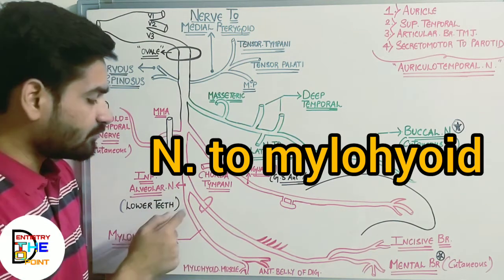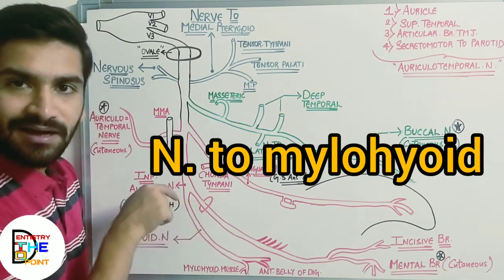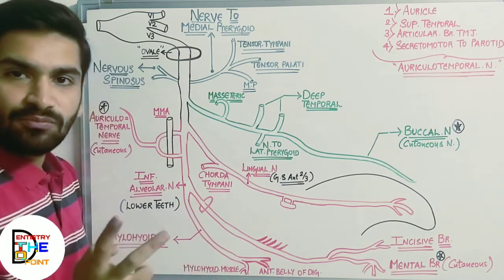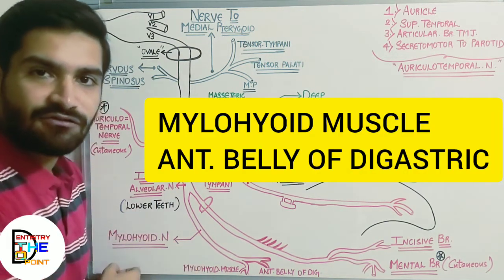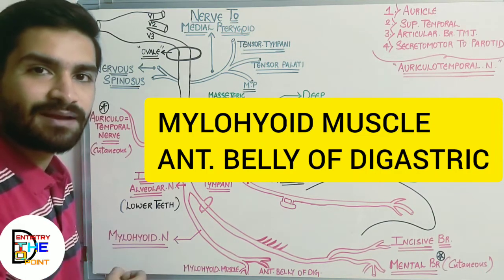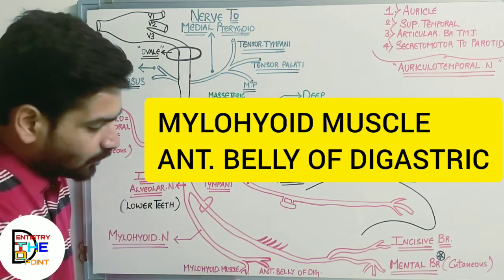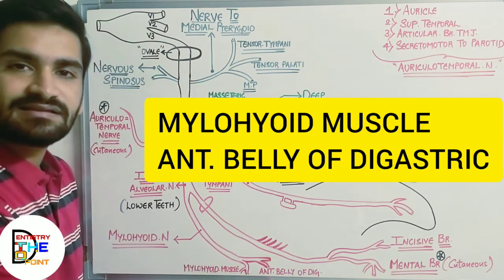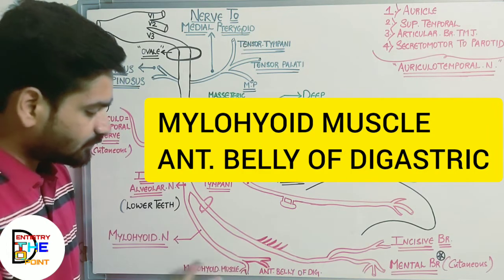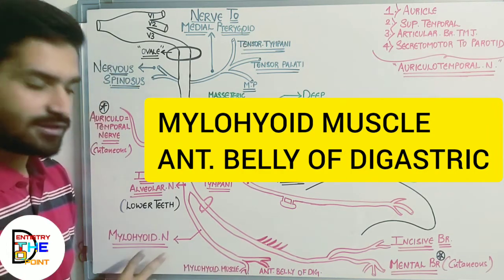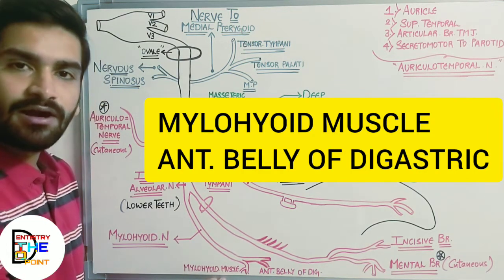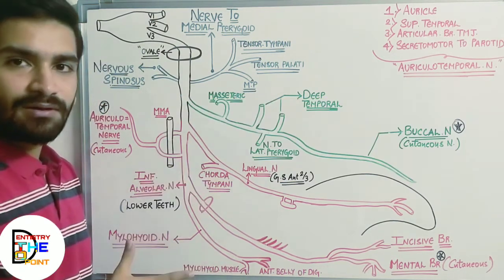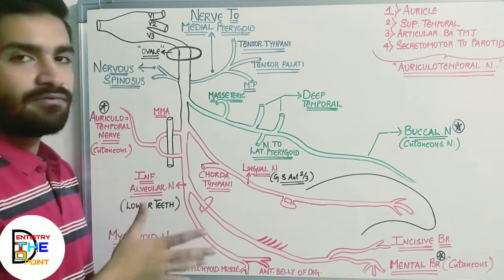The incisive branch supplies the incisors, and the mental branch supplies the skin of the chin — the mental area of the mandible. Before entering the mandibular foramen, the inferior alveolar nerve also gives off the nerve to mylohyoid. This nerve to mylohyoid supplies two muscles: the mylohyoid muscle and the anterior belly of the digastric muscle.